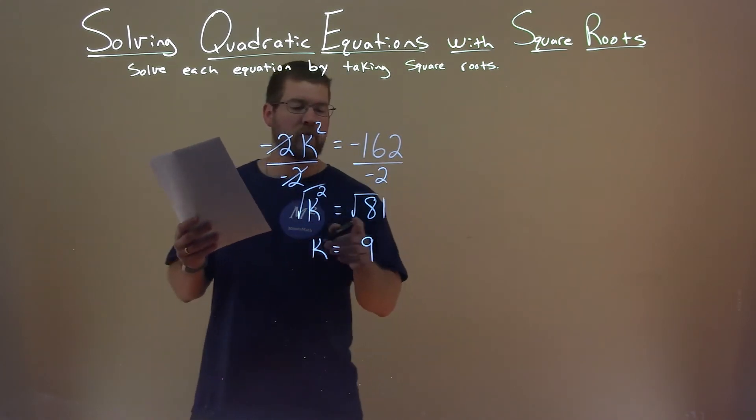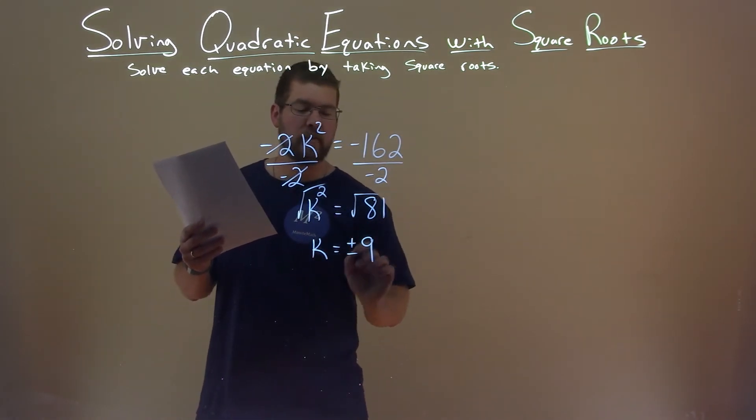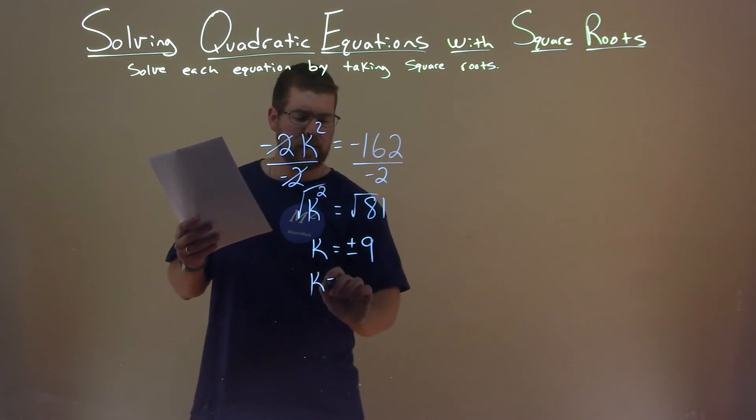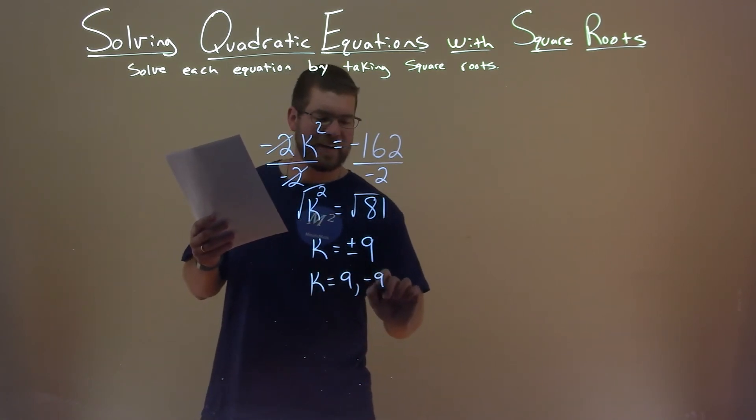But be careful—when we take the square root over the equal sign, we have plus and minus here. So that means k is positive 9 and negative 9.